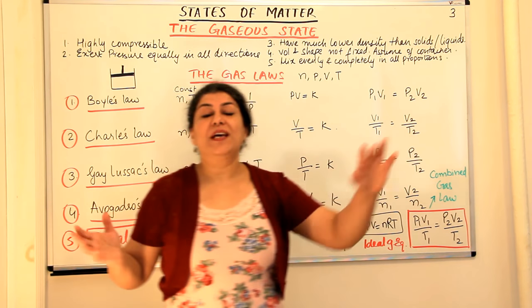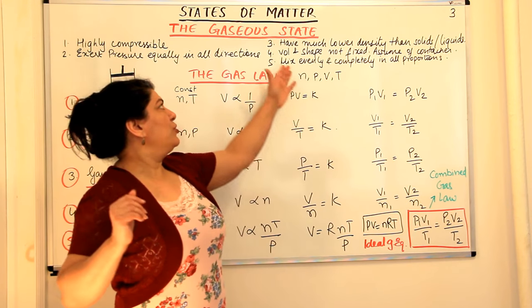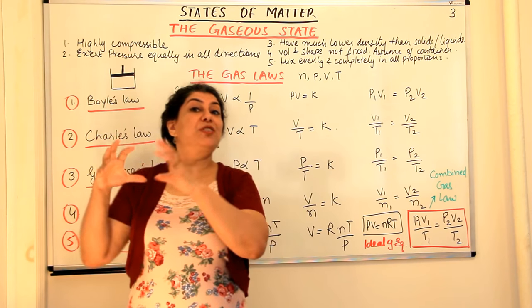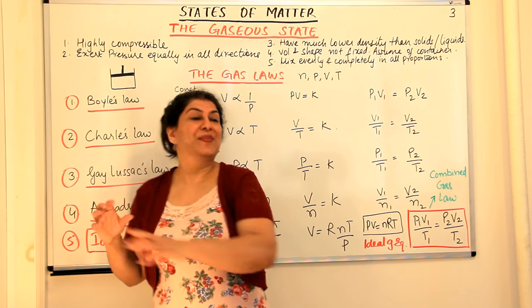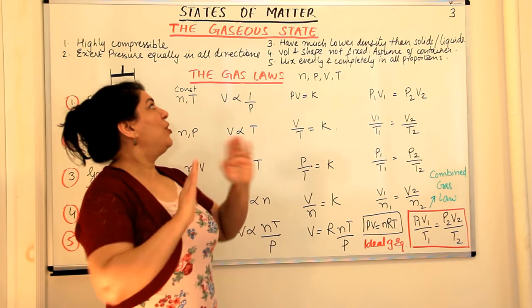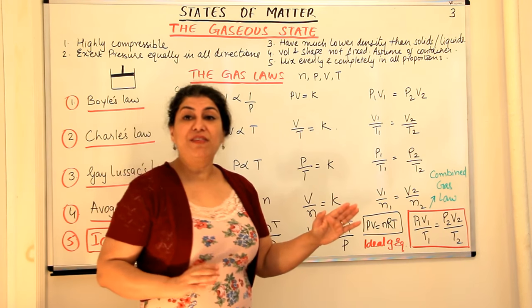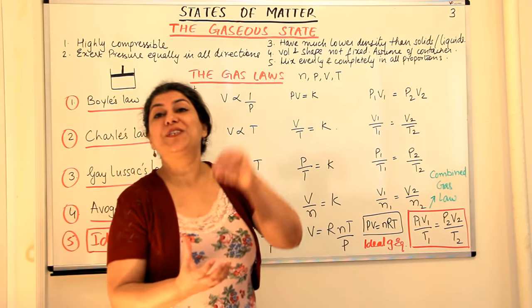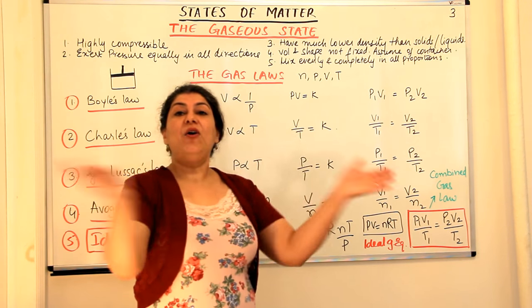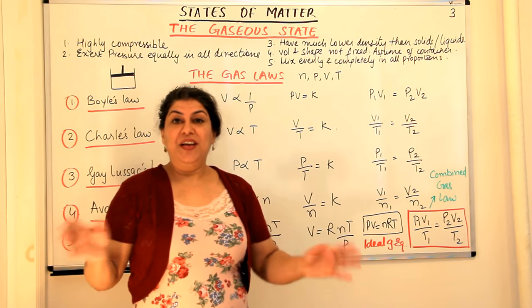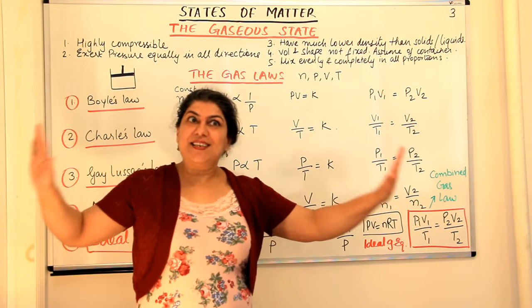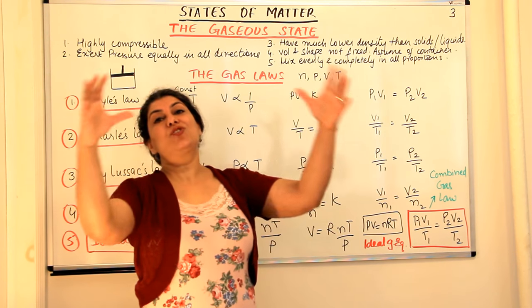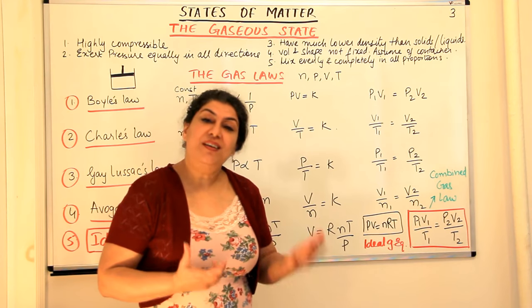In gases, the molecules are literally free to float about. There is maximum freedom of molecules and therefore they do not confine themselves to a particular shape or a particular volume. Gases assume the volume and the shape of whatever container you put them in, because the molecules randomly occupy the entire container and exert equal pressure in all directions.